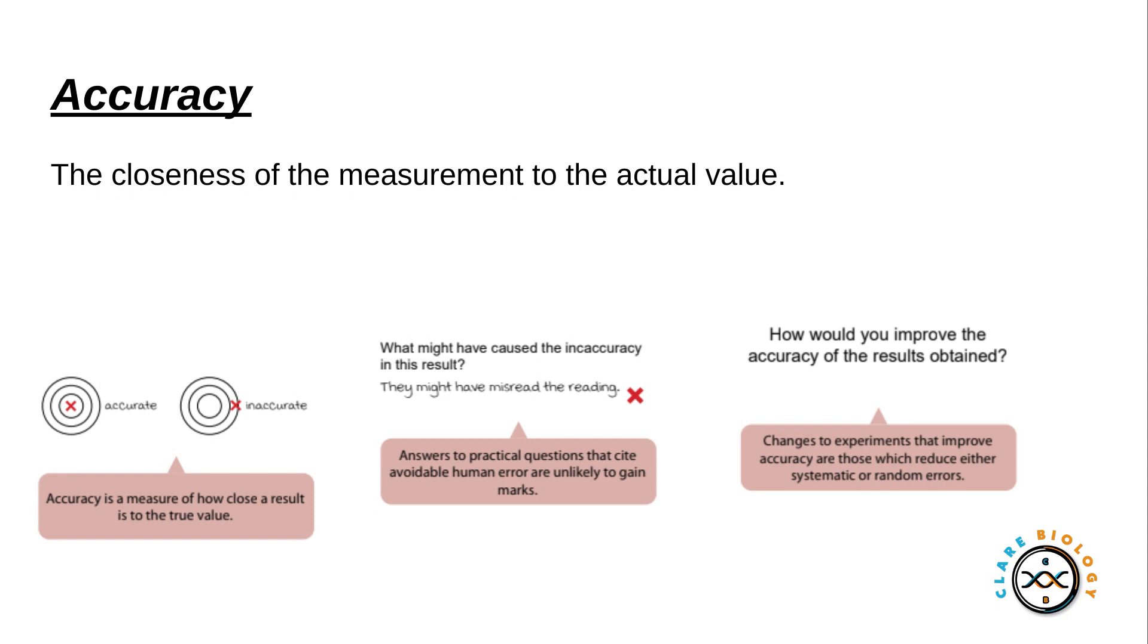First one we're going to look at is accuracy. This is the closeness of the measurement that you're trying to measure to the actual value and it's quite nice to demonstrate in this left hand image over here. You can see that in this one here the measurement is true to the actual value, it hits the target dead on, whereas in this part here you can see that it's inaccurate measurement, it is not close to that true value.